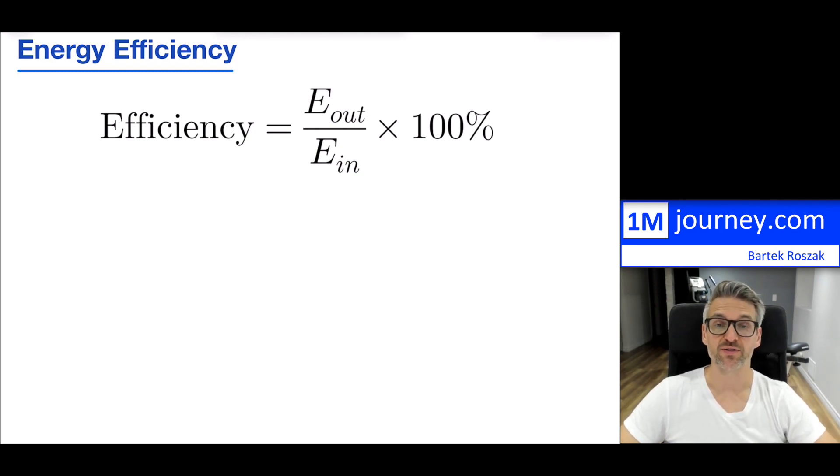So the whole idea behind efficiency is, if you're going to take your energy and you're going to use it, you want to be able to see how much of that energy will get transferred into your desired form of energy. That is all. And then you want to convert, and it's basically a ratio between one and the other, to be able to see that and convert it back into a percent.